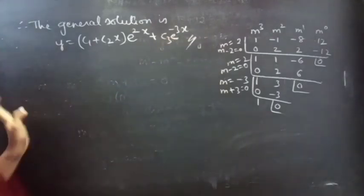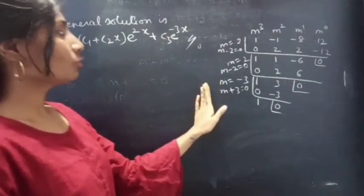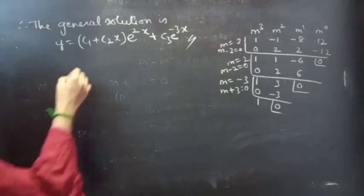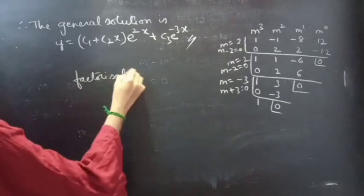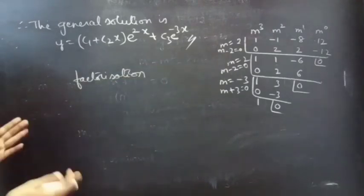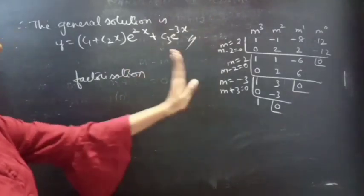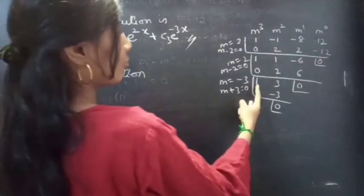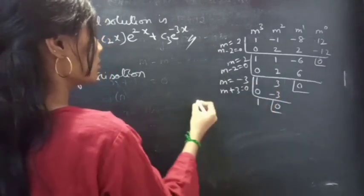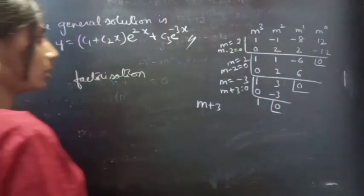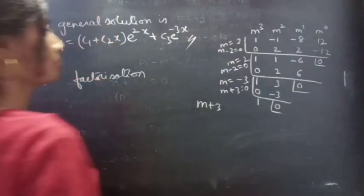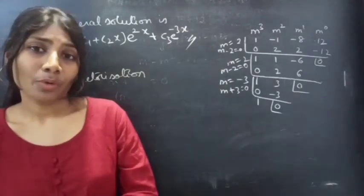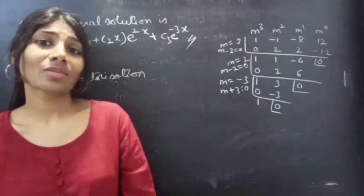This completes the problem. Here we have used synthetic division method to find the roots. You can use any suitable method — if there is a possibility of using factorization to find roots, you can go for factorization; otherwise, use synthetic division. If you notice the last step, having 1 and 3 means you can directly say m plus 3 is one factor without going further. We have seen a problem from higher order linear differential equation in this video. Hope you understand. We will see you in the next video. Bye-bye.